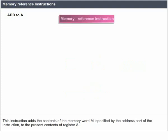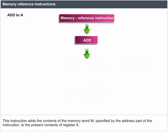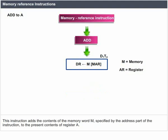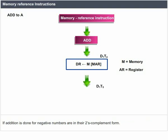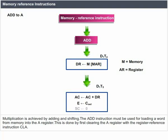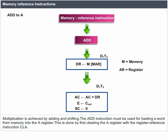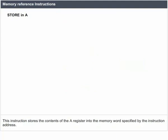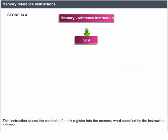ADD to A: this instruction adds the contents of the memory word M specified by the address part of the instruction to the present contents of register A. If addition is done for negative numbers in 2's complement form, the end carry out of the signed bit position is transferred to the E flip-flop. Multiplication is achieved by adding and shifting. The ADD instruction must be used for loading a word from memory into the A register by first clearing A with the CLA instruction. Store in A: this instruction stores the contents of the A register into the memory word specified by the instruction address.